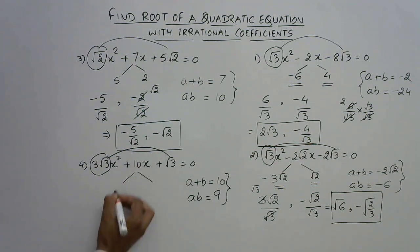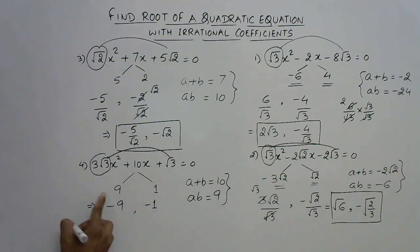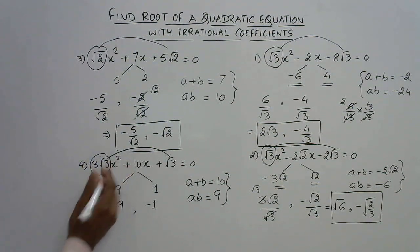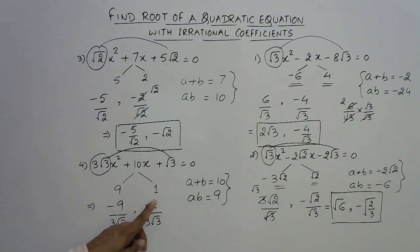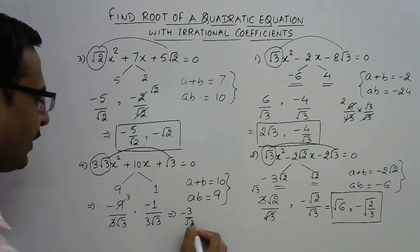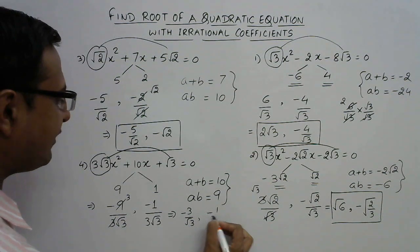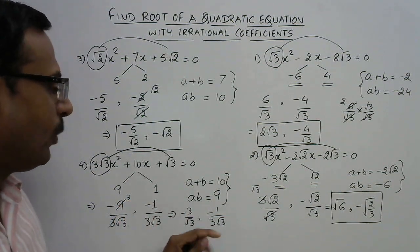The middle term split gives 9 and 1. In the second step, change the sign: 9 becomes -9 and 1 becomes -1. In the final step, divide by the coefficient of x², which is 3√3. So we get -9/(3√3) and -1/(3√3). The 3 cancels with 9 giving -3/√3. When numerator and denominator have no common factor, the answer can be left as is — no marks will be deducted for not rationalizing.